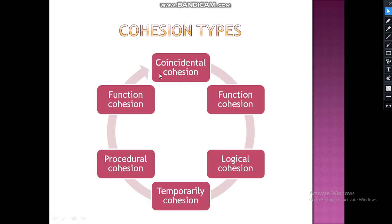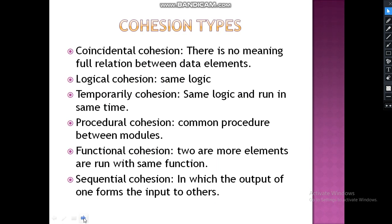The different types of cohesion are: coincidental, functional, logical, temporal, procedural, and sequential cohesion. Coincidental cohesion: there is no meaningful relation between data elements; elements in a module are executed coincidentally. Logical cohesion: two or more elements within the module run with the same logic.